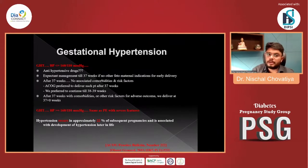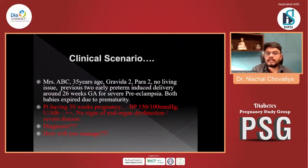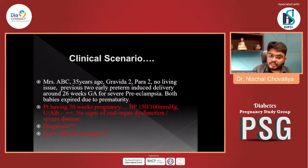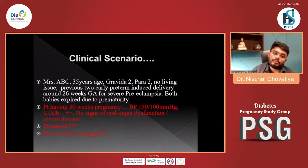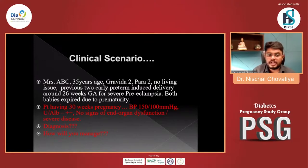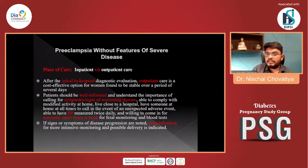Case 3: Same patient now at 30 weeks, blood pressure 150/100, urinary albumin positive, no signs of end-organ damage. Diagnosis: preeclampsia without features of severe disease.